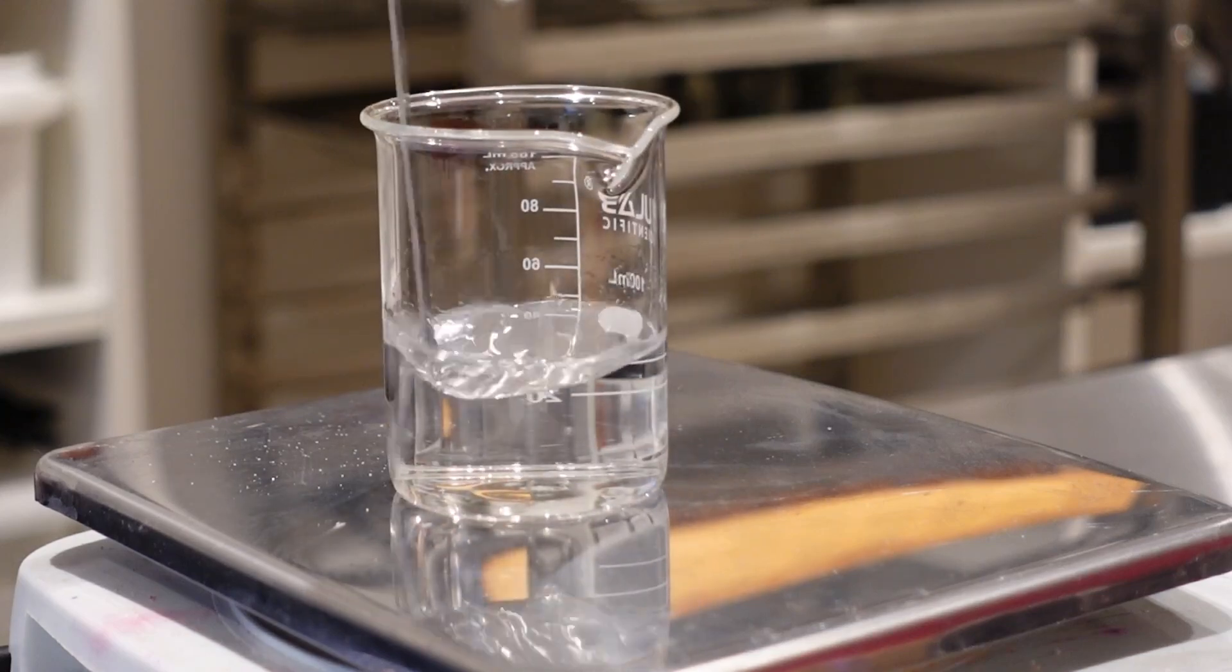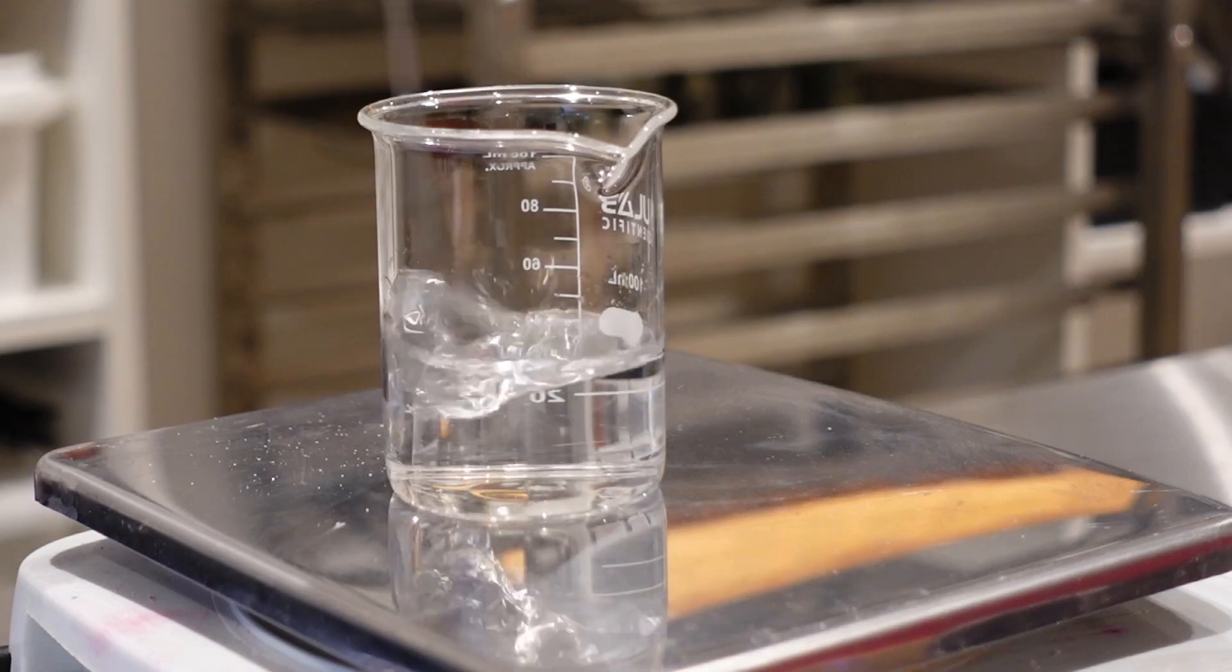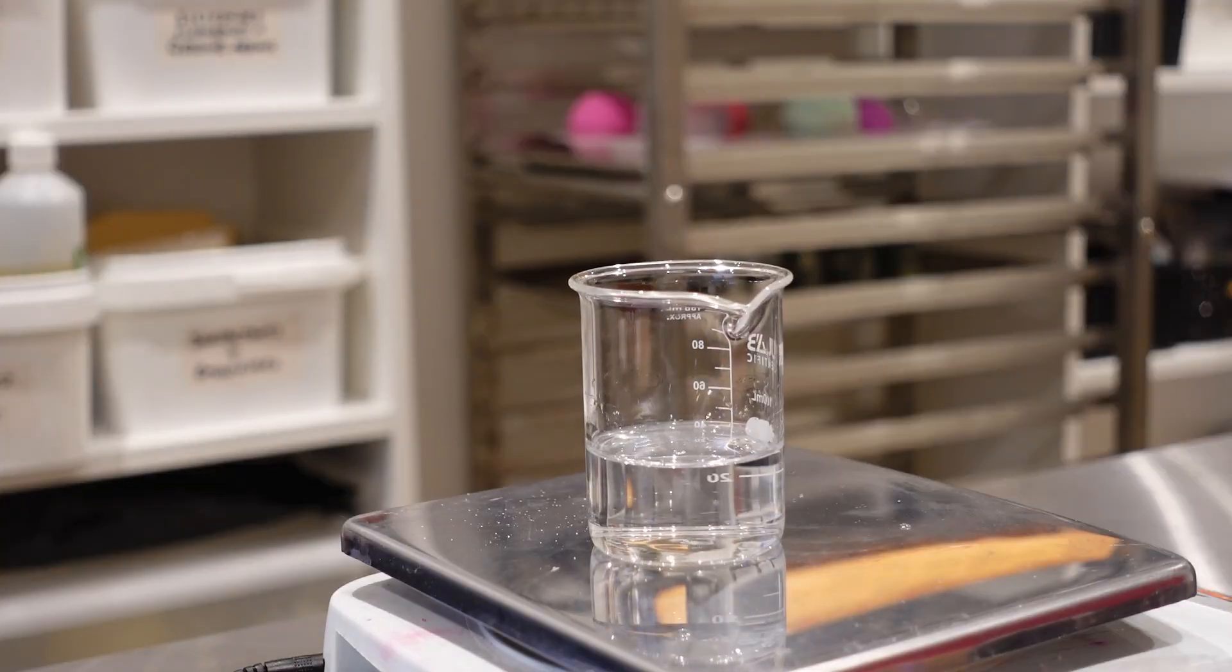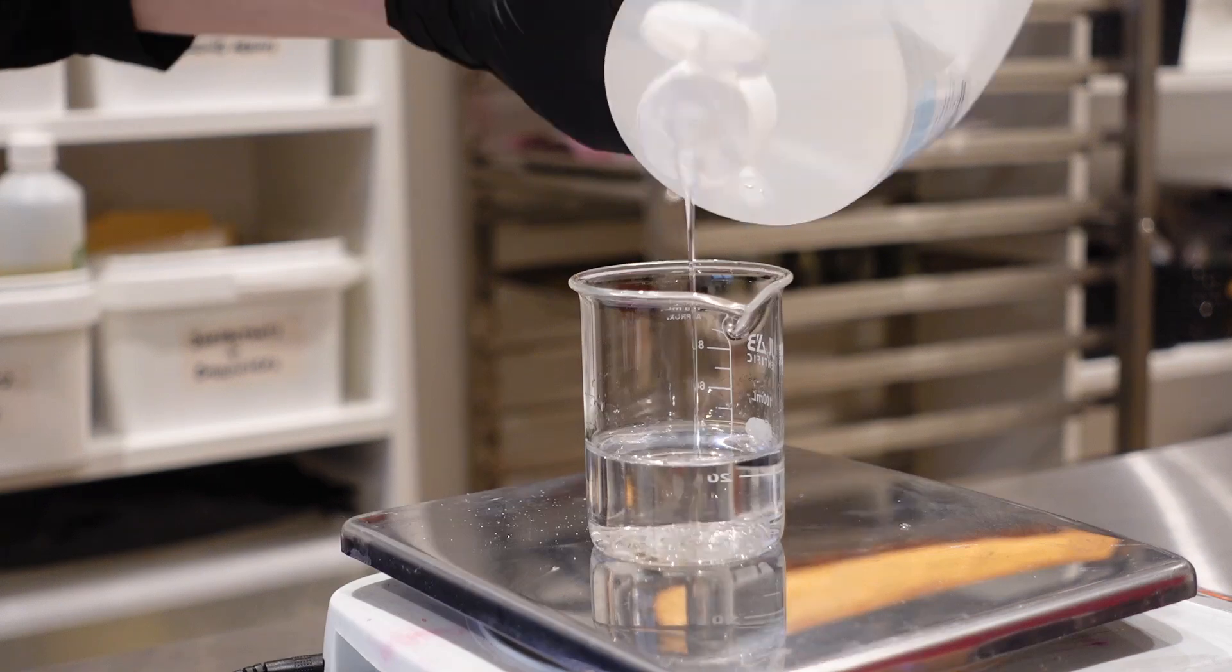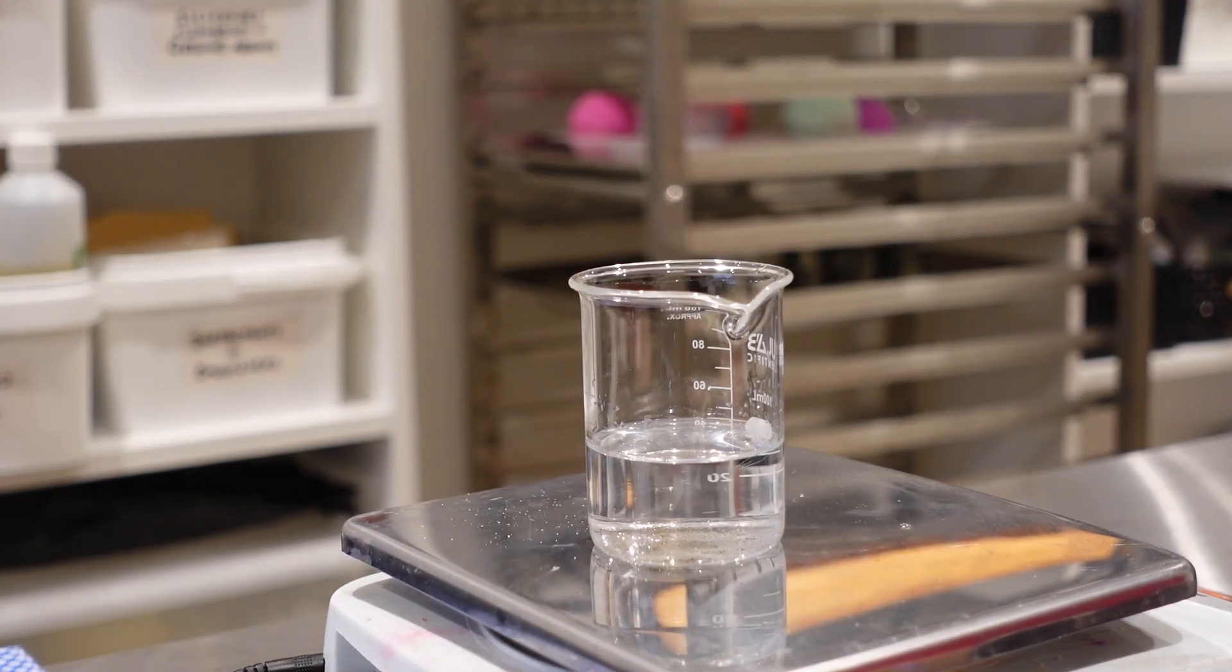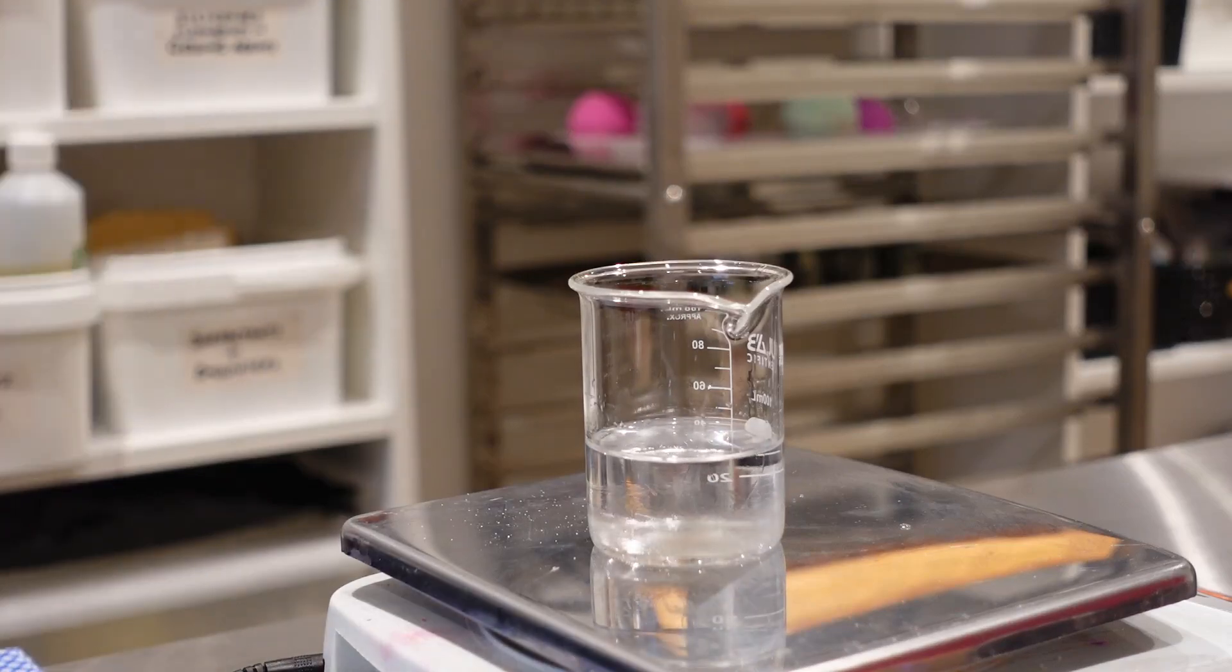After we've added it to the water, we can add some humectants. I'm using vegetable glycerin and propanediol. They're both quite similar, but propanediol is a lot lighter weight and less sticky, which is why I've used both. To use all glycerin would make a very sticky serum, but I have used some of it because of the viscosity.